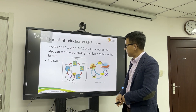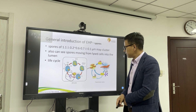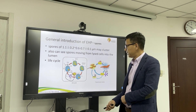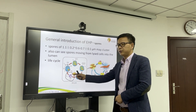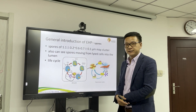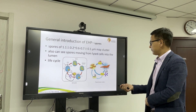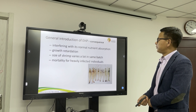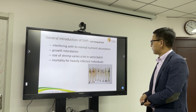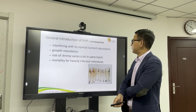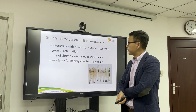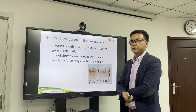Once a lot of spores multiply, the cell will die. Cell rupture then releases a large number of spores, which go on to infect healthy cells. The consequences include interference with normal nutrient absorption and impaired growth of shrimp.